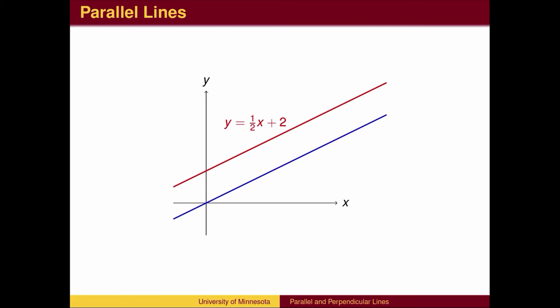Suppose we are given the equation of a line, for example, y equals 1 half x plus 2, and we wish to find the equation of a line parallel to it. What is the slope of the lower line?